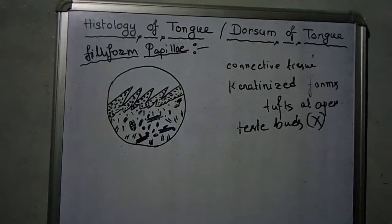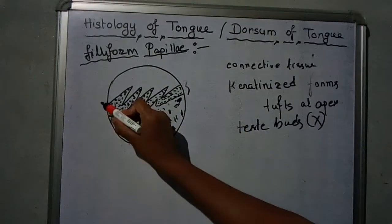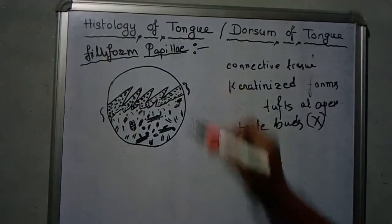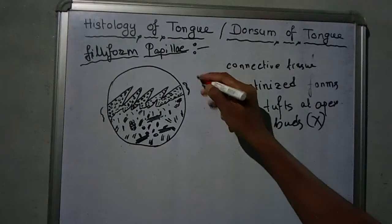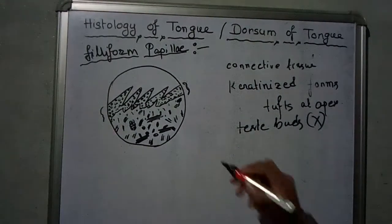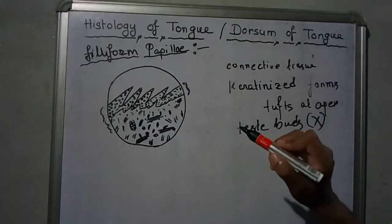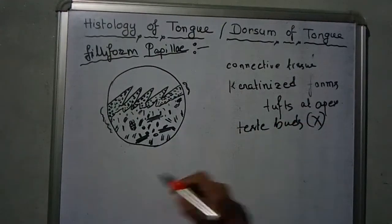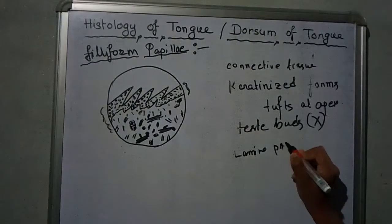This was a brief description about the filiform papillae. Looking at the slide, this area is stratified squamous epithelium, and number two is the lamina propria.